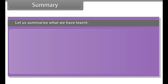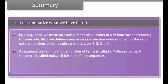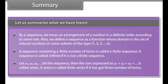Summary: By a sequence we mean an arrangement of numbers in a definite order according to some rule. A sequence is also defined as a function whose domain is the set of natural numbers or some subset of the type 1, 2, 3, ..., k. A sequence containing a finite number of terms is called a finite sequence. A sequence is called infinite if it is not a finite sequence. The sum expressed as a1 + a2 + a3 + ... is called a series. A series is called a finite series if it has a finite number of terms.